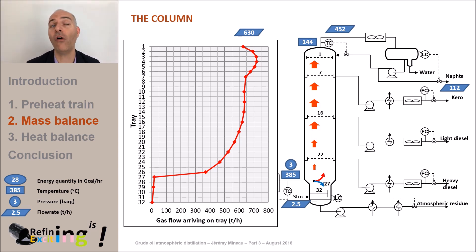Like we said before, 452 tons per hour of overhead gas enters the condenser. 4 tons per hour of water condenses. It results from the stripping steam injected at the bottom of the tower and the residual water leaving the desalter. Then 112 tons per hour of naphtha will be withdrawn. There remains 452 minus 112 minus 4 equals 336 tons per hour of liquid that we will re-inject in the tower. This is called the reflux.